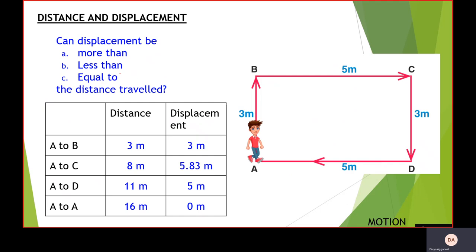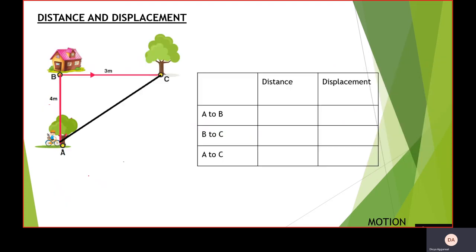Next question: can displacement be more than, less than, or equal to the distance traveled? Displacement can never be more than the distance traveled. Since displacement is the shortest path, it can be less than the distance traveled, or equal to the distance traveled — as seen in the case A to B — but it can never exceed the distance traveled.